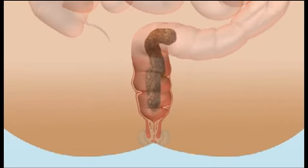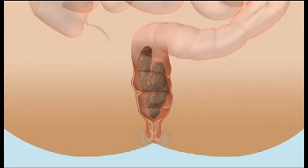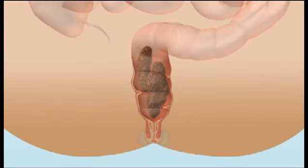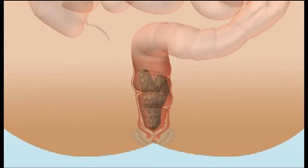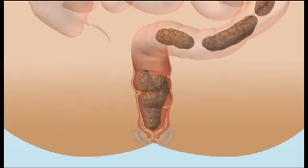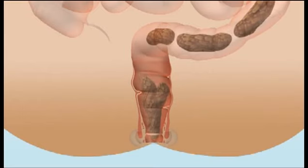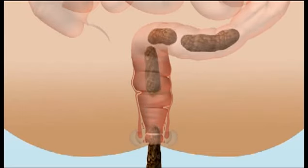When stool fills your rectum, nerve endings register that your bowel wall becomes distended and a signal is sent to your brain, telling you that it's time to find a toilet. At the same time, your internal sphincter relaxes by reflex and stool moves down towards the anus. When you are ready, you consciously allow the external sphincter to relax and stool is expelled.